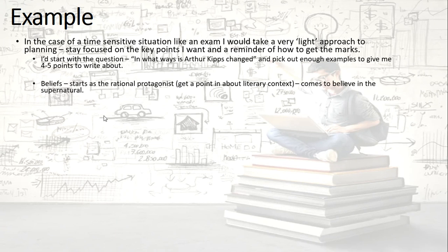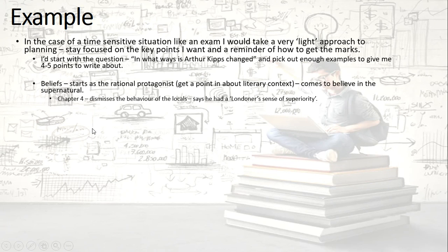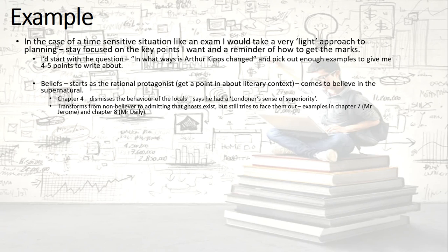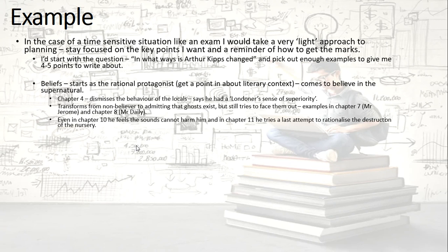Starting with the question — in what ways has Arthur changed? — I'd pick out the idea that his beliefs have changed. He starts off as the rational protagonist, getting a point in there about literary context: the rational protagonist is a trope of gothic horror and ghost stories. We need rational protagonists because people who believe in the supernatural tend to avoid haunted places. Arthur starts as the rational protagonist and comes through to a belief in the supernatural. My points to illustrate this: Chapter 4 where he's dismissing the locals; Chapters 7 and 8 where he tells Mr. Jerome he should face it out and refuses to be warned off; Chapter 10 where even after the haunting in the nursery, he lies in bed thinking the sound can't hurt him; and Chapter 11 where he looks to see if someone has broken into the nursery.